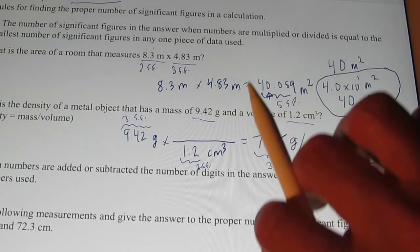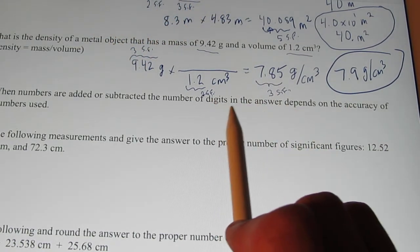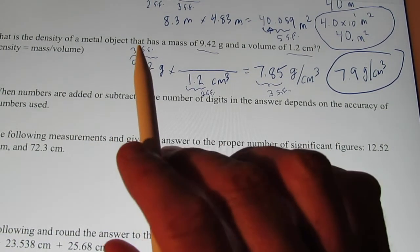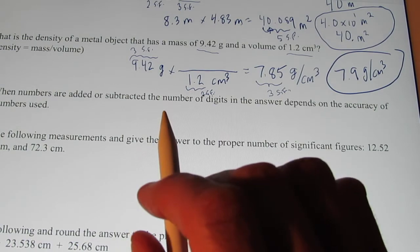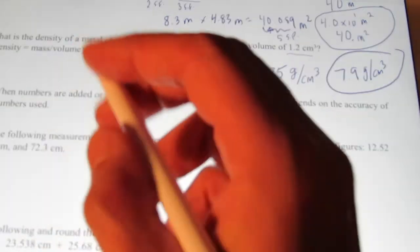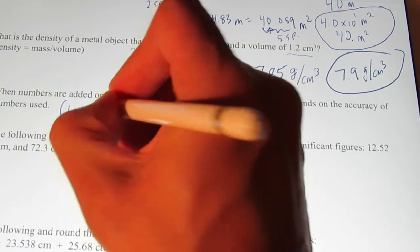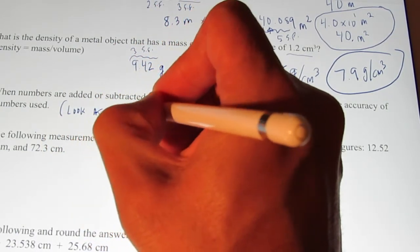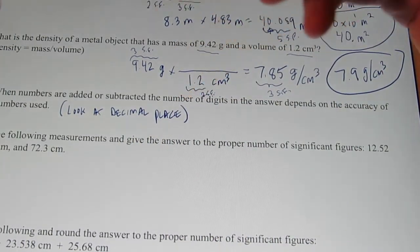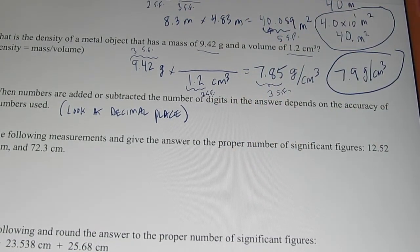Now, what about adding and subtracting? Well, the rule's a little bit different. When numbers are added or subtracted, the number of digits in the answer depends upon the accuracy of the numbers used. Now, the accuracy of the numbers used simply means that I take the least accurate piece of data and round my answer off to that decimal place. So, when I add or subtract, I look at the decimal place. And I want to use the measurement that has the fewest number of decimal places, and that's where I'd like to round my answer. Let me give you a couple of examples.